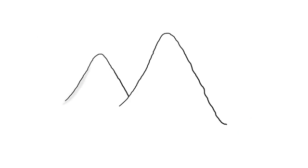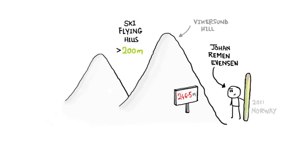And for those daring out there you might like to know there are also ski flying hills in the 200 plus meter range. In fact, the world record for the longest ski jump was 246.5 meters.